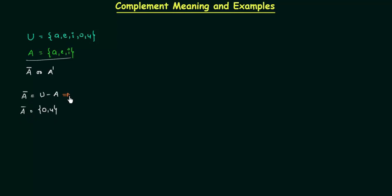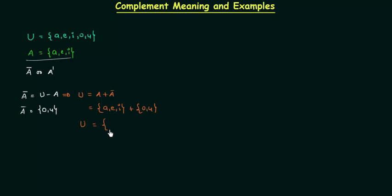You can definitely prove that U is equal to A plus A-complement. Elements of A are a, e, i and elements of A-complement are o, u — together these form the universal set having elements a, e, i, o, u. So the only thing you have to keep in mind is to include the elements which are not present in the set when you are taking the complement.